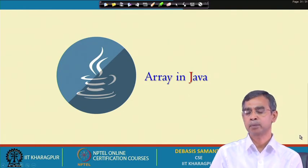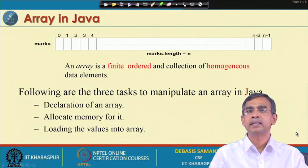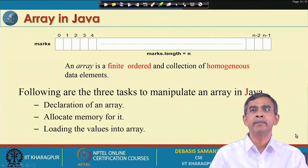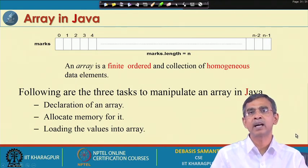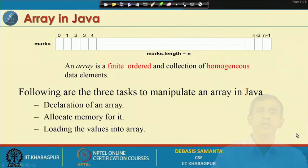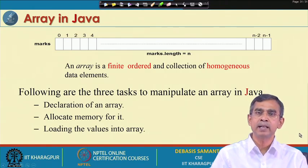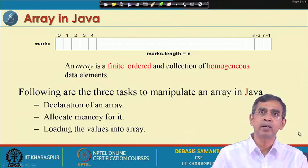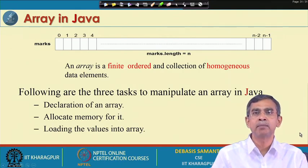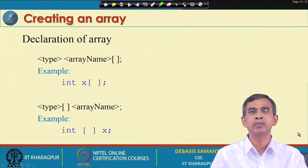Now I will quickly come to the discussion of array, which is one very important structure in Java. Array is basically used when instead of only one variable value, you have to store a number of elements into a chunk of memory - then it is called an array. An array is basically a finite collection of elements of the same type - that means integer with integer, character with character, float with float. We will quickly discuss how an array can be declared in Java, how to allocate memory for the array, and how to load values into the array.